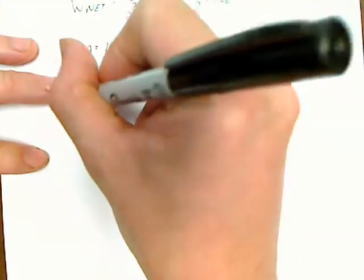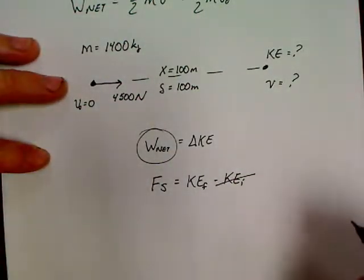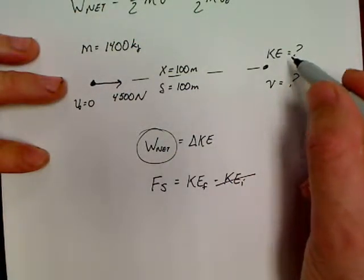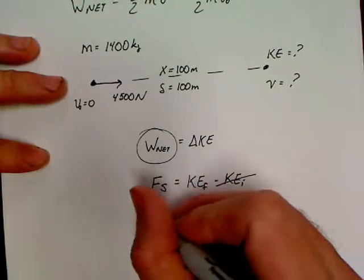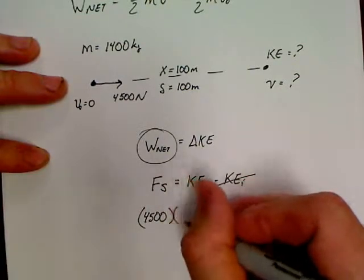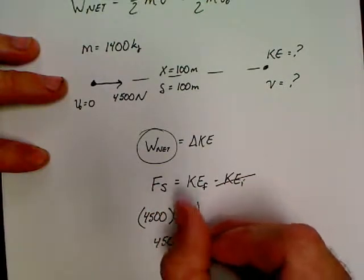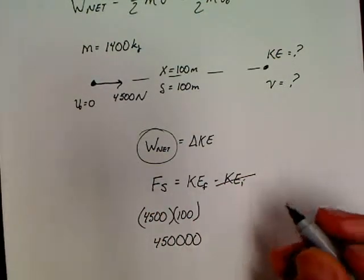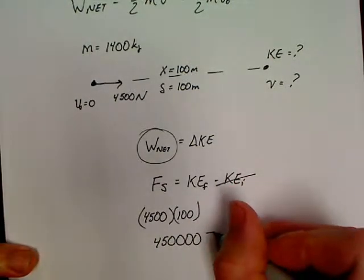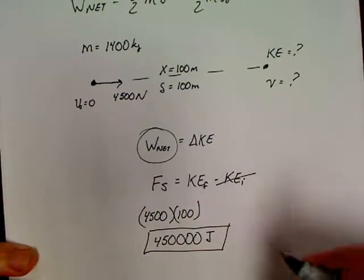So, that means there is no initial kinetic energy. So, look. If we want to find this kinetic energy, it's just Fs. So, all we've got to do is 4,500 times 100. Hey, we don't need a calculator. 4,500, and add two more zeros. And this is energy. It is work. So, the unit is a joule. So, there. There is our kinetic energy.